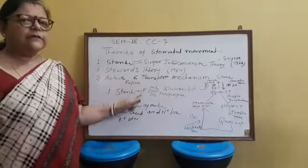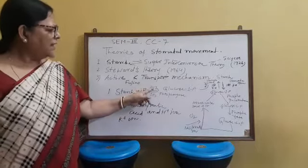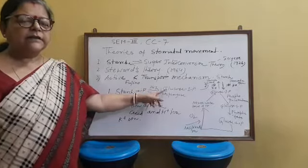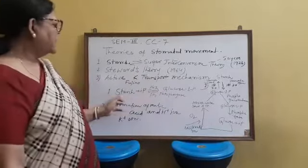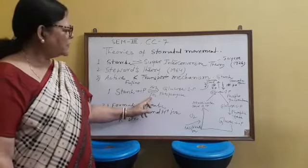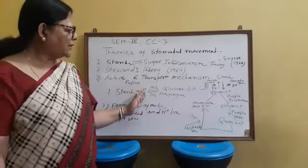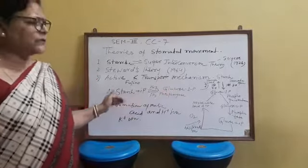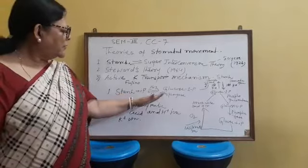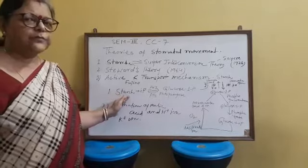One important point in this theory: when the stomata is open, the pH inside the guard cells increases, meaning it becomes more basic. When the stomata closes, glucose is converted back to starch, inorganic phosphate is released, the pH drops, and the stomata returns to the flaccid condition and closes.